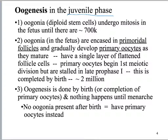We're going to start with oogonia. You'll remember from the male reproductive system that we talked about spermatogonia. Both of these are stem cells — they are diploid — and they are both going to go through mitosis. With the oogonia, you're going to end up with around 700,000 oogonia stem cells sitting in the fetus.